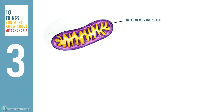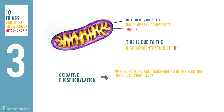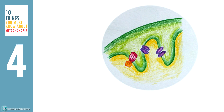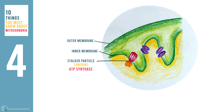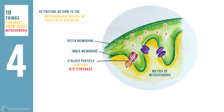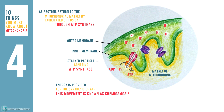The intermembrane space has a lower pH compared to the matrix, due to the high concentration of protons. When electrons are transferring in the electron transport chain, protons are pumped from the matrix to the intermembrane space. The stalked particle can be found on the inner membrane of mitochondria, and it contains ATP synthase. As protons return to the mitochondria matrix by facilitated diffusion through ATP synthase, energy is provided for the synthesis of ATP. This movement is known as chemiosmosis.